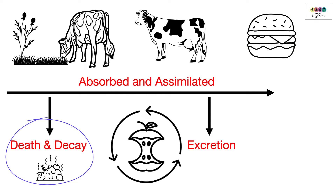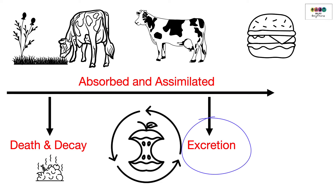Also involved in this cycle is death and decay. When plants and animals die, the nitrogen-containing compounds are broken down by bacteria and fungi and released to the soil. The same applies to the products of excretion.